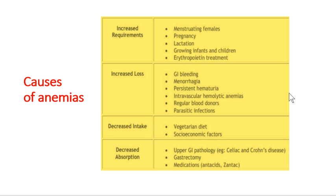Fourth is decreased absorption. Various GI pathologies can result in poor nutrient absorption. For example, celiac disease — an allergy to gluten — causes diarrhea, decreasing absorption. Chronic diseases with severe diarrhea similarly reduce absorption. Gastrectomy is important because the stomach is needed to convert ferric iron (Fe³⁺) from food into ferrous iron (Fe²⁺) for absorption in the gut. Antacids which prevent HCl production can also impair this conversion, causing decreased absorption.